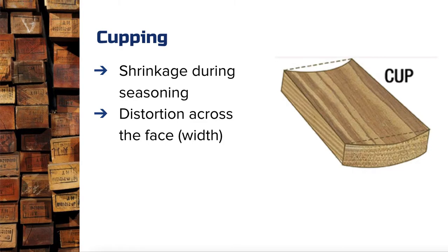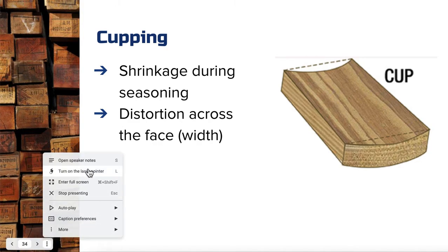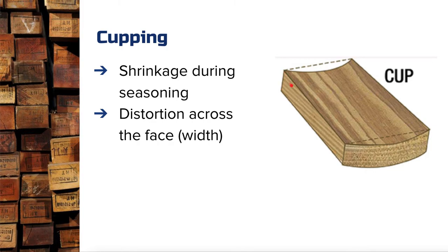Cupping is a bit of an issue — we get this quite a lot. It tends to happen as a result of seasoning: if the timber is dried too fast, dried unevenly, or there's not enough airflow. Looking at the image here — cupping occurs across the width of the timber, not along the length or thickness. It's important to note that because different defects affect different dimensions. Cupping means if you go across the width and it's not perfectly flat, it's got that cup shape — where the inside dries out really quickly, it closes together and pulls the sides into each other.